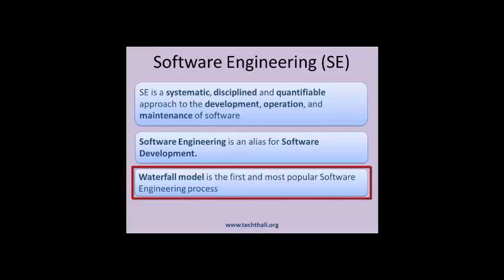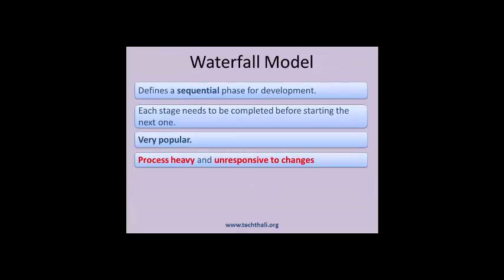Waterfall model is the first and most popular software engineering process. Software development has traditionally been performed using the waterfall methodology. It focuses on completing each phase of development before the next phase starts. Waterfall development methods are sequential, prescriptive and documentation intensive. Though it is popular, it is process heavy and unresponsive to changes.